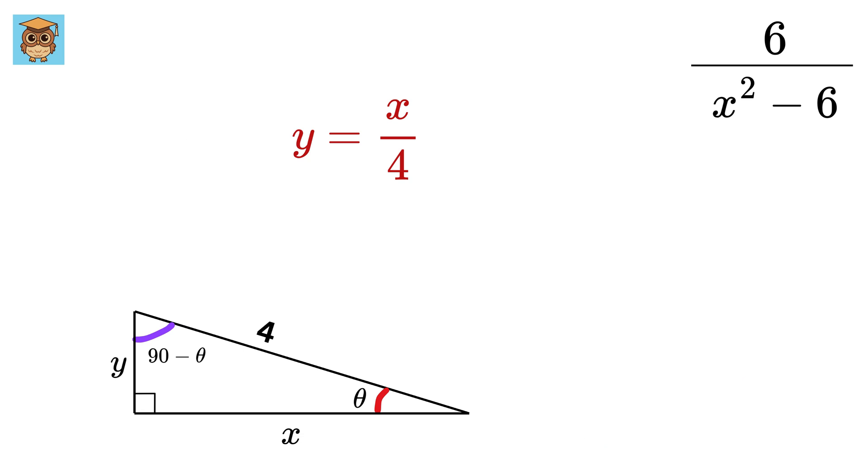We can use Pythagoras theorem to find the value of X. We get X square plus Y square equals 4 square, or 16. Then substitute Y here to make it X square plus X by 4 whole square equals 16. Adding them, we get 17 X square over 16 equals 16, and thus X square equals 256 over 17.